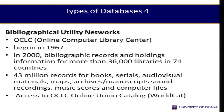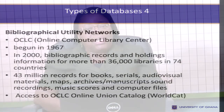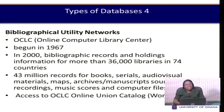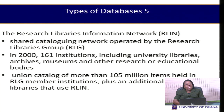We also have numeric databases, which contain only numbers and figures. Another type is bibliographical utility networks—networked databases—with examples including OCLC (Online Computer Library Center) and RLIN (Research Libraries Information Network). These are networked databases that require a subscription to access their information.